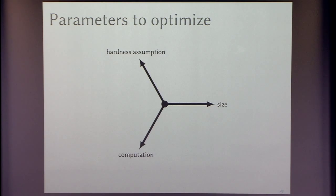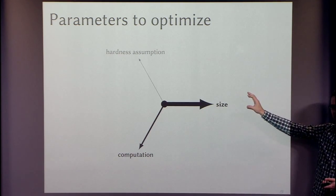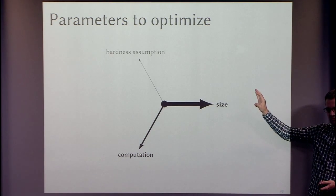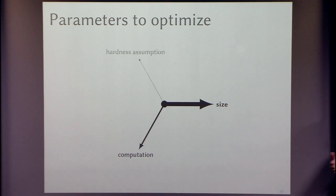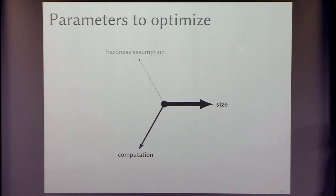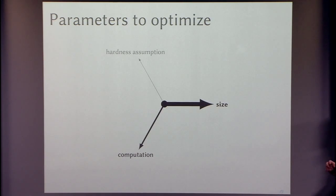The focus of this talk is optimizations of garbled circuits throughout the years. There are different parameters we can optimize: the hardness assumption, the size of the garbled circuit, the number of ciphertexts sent per gate, and the cost of computation. In this talk I'll focus on size as an objective metric. Most applications of garbled circuits find that communication overhead is the major bottleneck, so reducing size is the key factor.